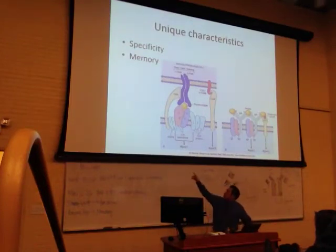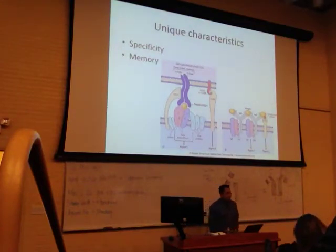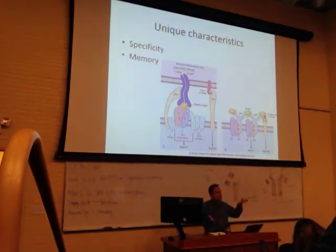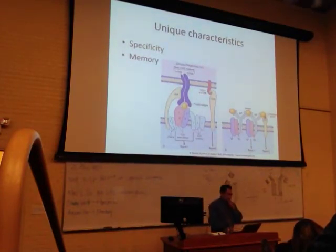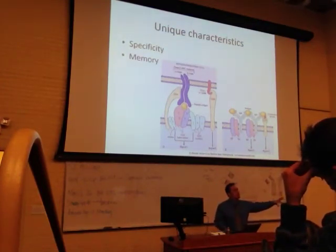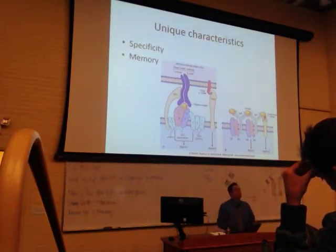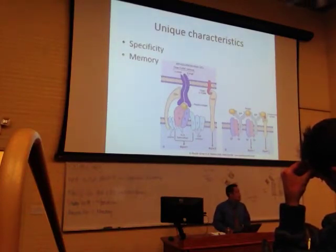CD8-positive T cells bind to MHC class 1 — that's 40% of activity, a smaller percentage than CD4. They do make cytokines, but mostly they directly go and kill the infected cell. The helper T cells are like politicians — they're not going to get their hands dirty; they'll find a henchman to do the dirty work. The cytotoxic T cells are like the mafia — they'll just go out and pull the trigger.